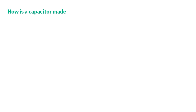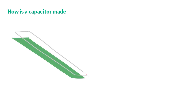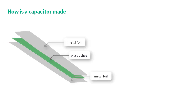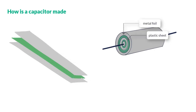Capacitors used in various applications have two long strips of metal foil separated by a plastic sheet that could be made of manganese or mylar or some other material, and then this combination is rolled up to a compact unit that can provide the required capacitance and energy.